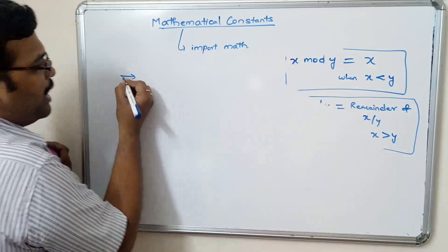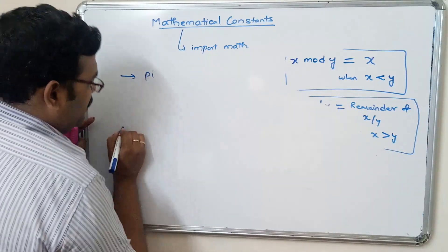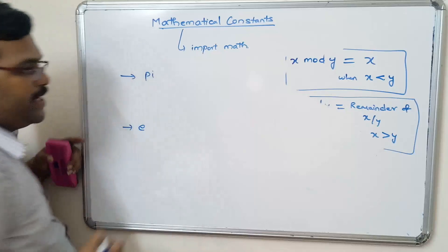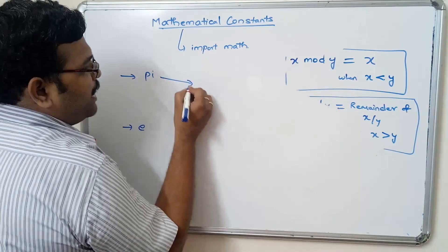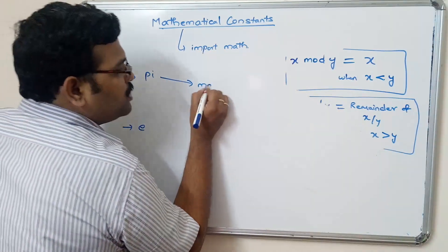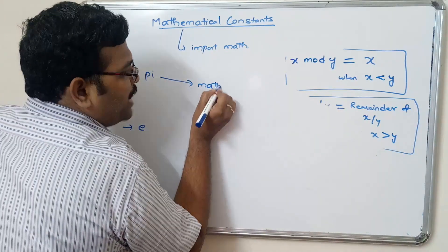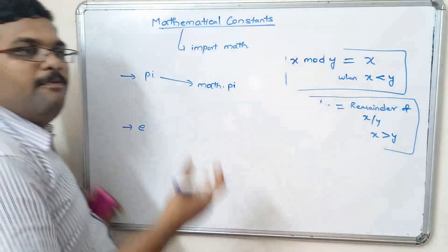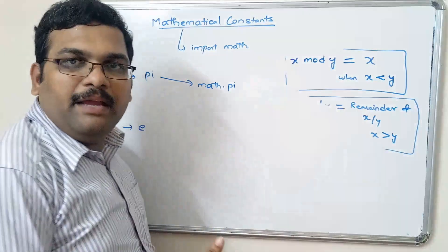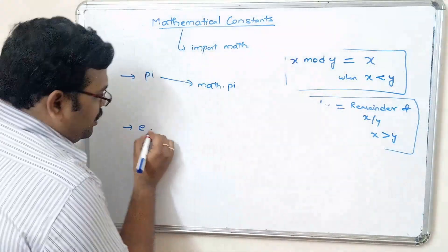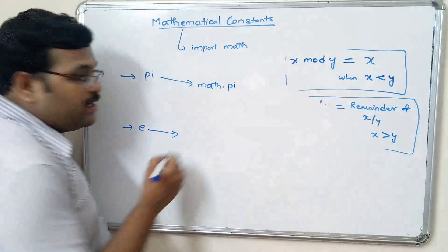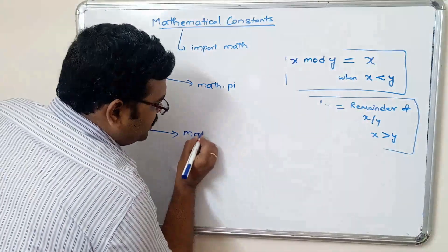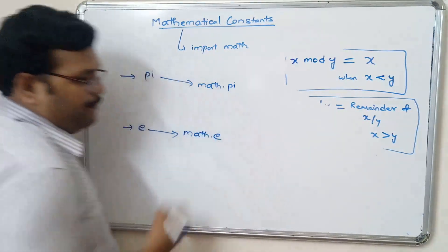The two mathematical constants are pi and the exponent e. In order to get pi, we use math.pi — it will automatically give the value of pi. In order to use the exponent constant in expressions, we use math.e, which automatically gives the value of the mathematical constant e.